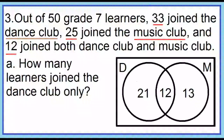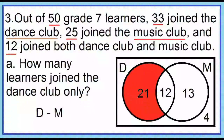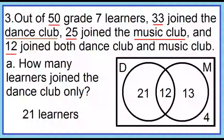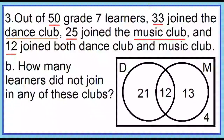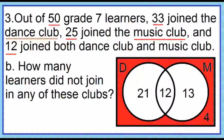Next, there are 50 grade 7 learners. Let's find the cardinality of D union M: 21 plus 12 plus 13 equals 46. 50 minus 46 is 4. Place 4 outside the two circles, but inside the rectangle. How many learners joined the dance club only? 21 learners. How many learners did not join any of these clubs? 21 learners.